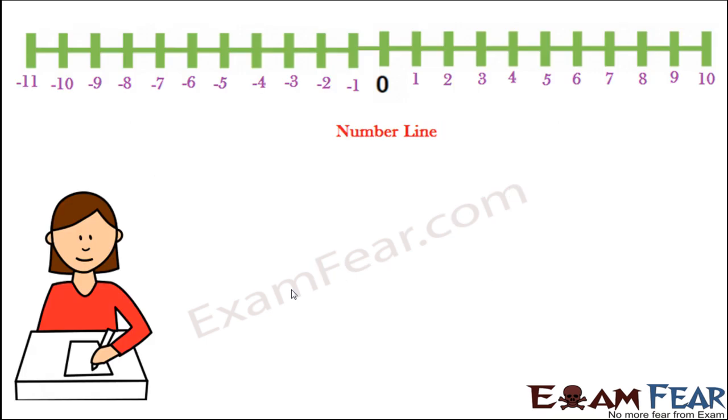So now that we have learned so much about rational numbers, you might be thinking where exactly are these rational numbers situated on the number line? Because when we look at the number line, we can locate the natural numbers like 1, 2, 3, 4 and so on.